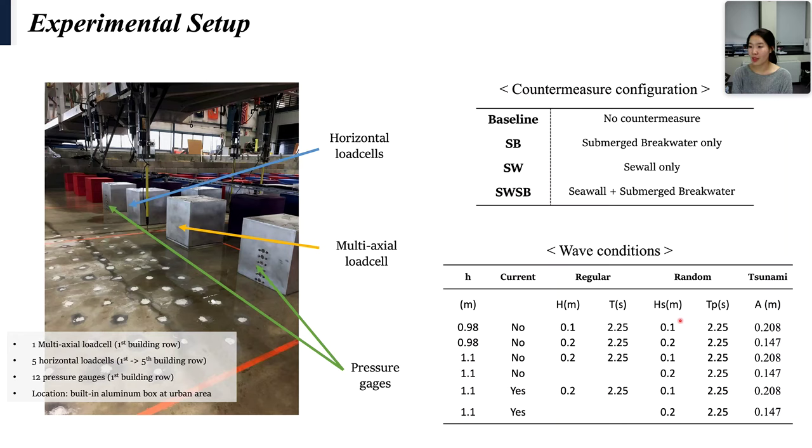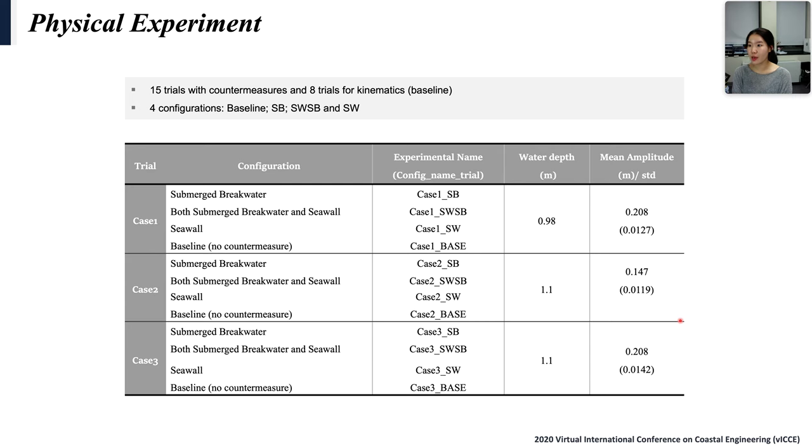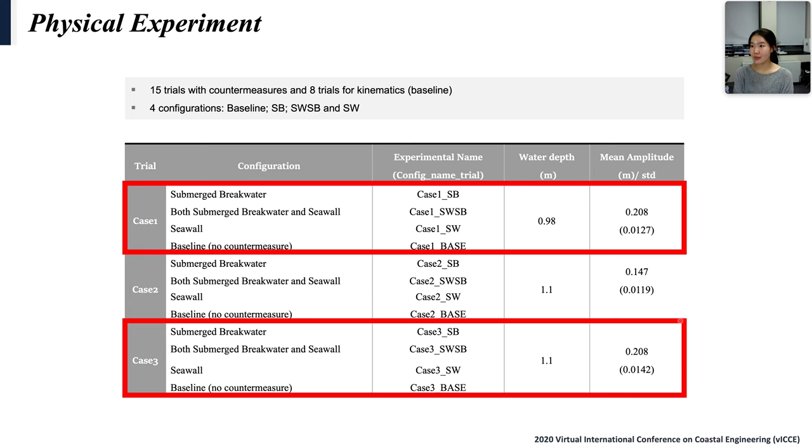Even if this experiment was done for storm waves, like regular and random waves, only tsunami conditions without currents is going to be focused today. We classified cases into three groups for effective analysis with two different water depths and wave height. Today, I'm gonna compare the results of only case 1 and 3, which are same wave height and different water depths. Each case includes four different configurations.